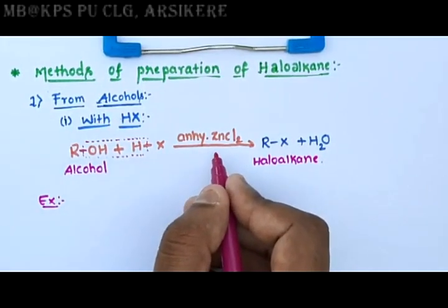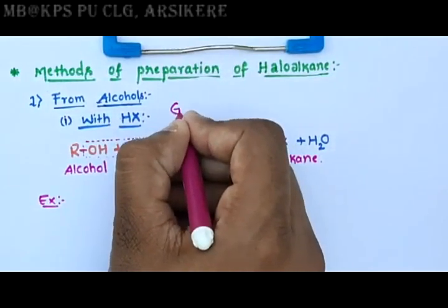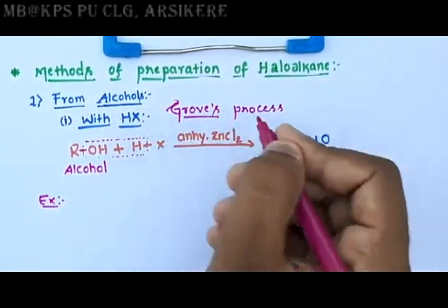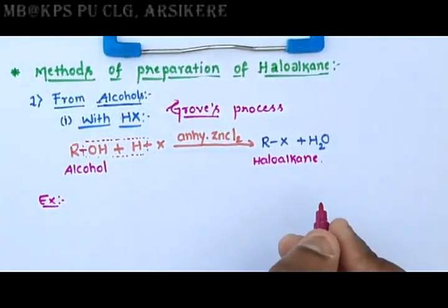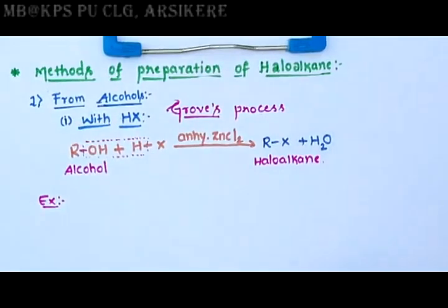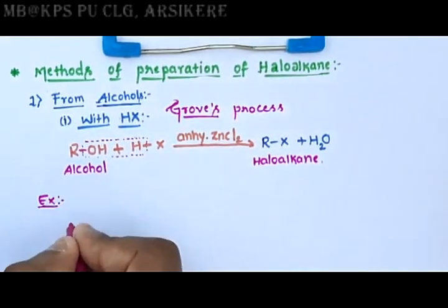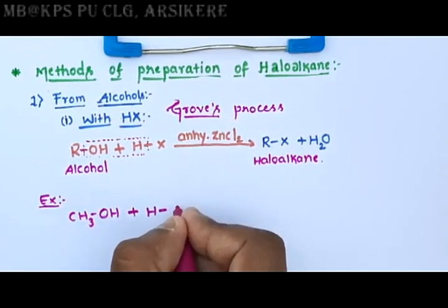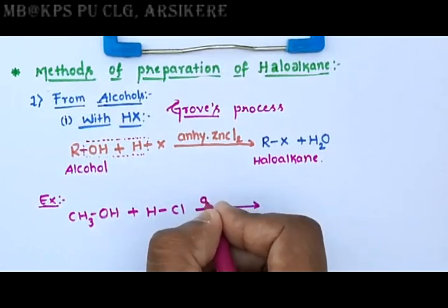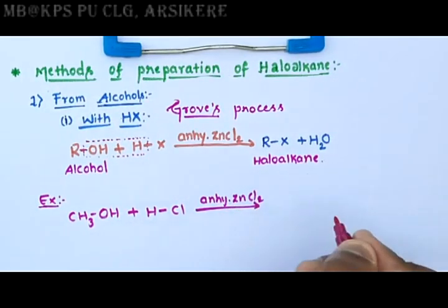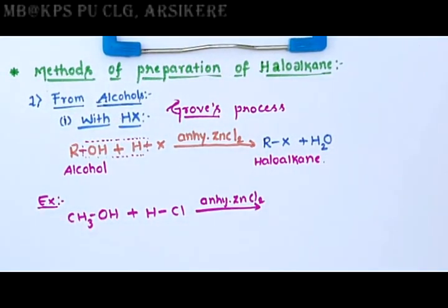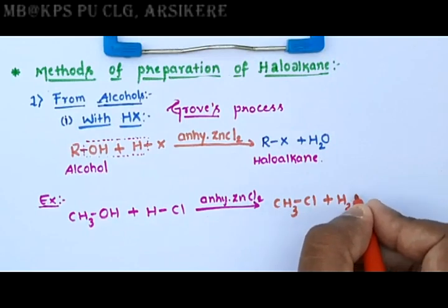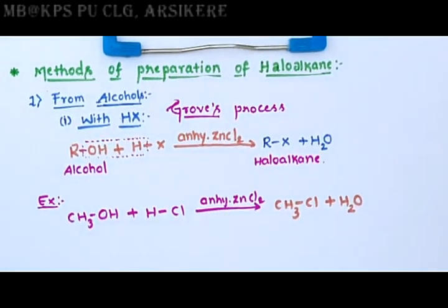This process is called the Gross process. The reaction occurs in the presence of anhydrous zinc chloride. The product becomes CH₃-Cl plus H₂O.